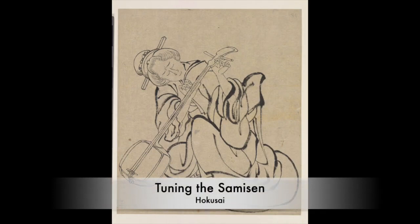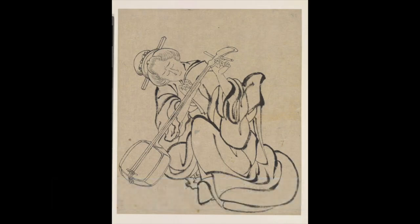Hokusai named his drawing 'Tuning the Samisen.' Samisen is the name of a musical instrument from a country in Asia called Japan. This picture shows a woman getting her instrument ready to play by turning the strings. When Hokusai made this drawing, he decided that some of the lines should be thick and some should be thin. Can you point to thick lines in the drawing? Can you point to thin lines?